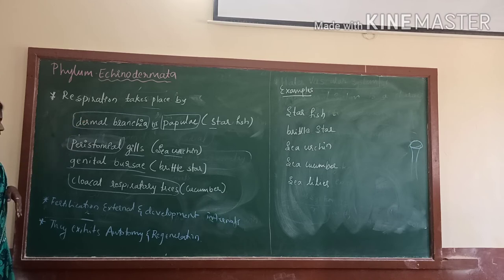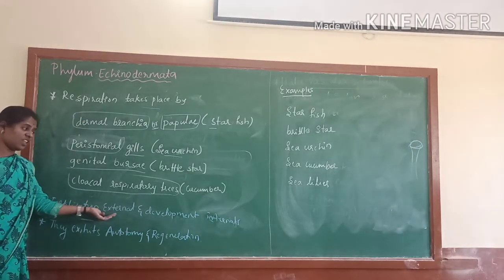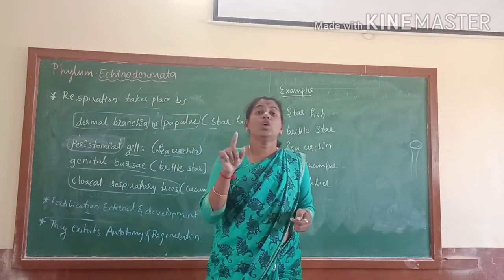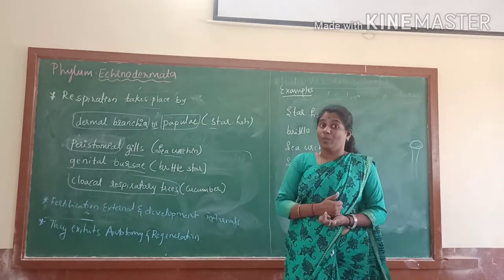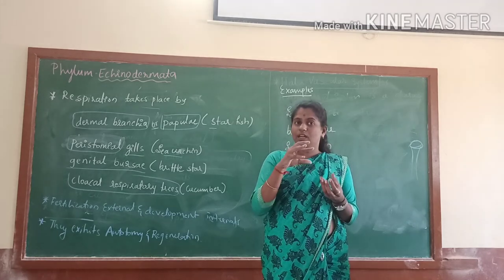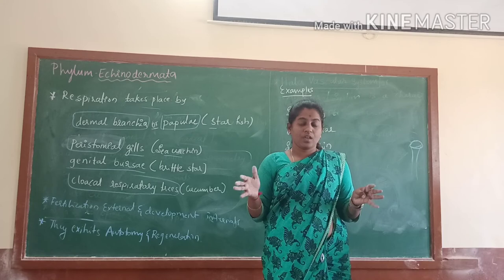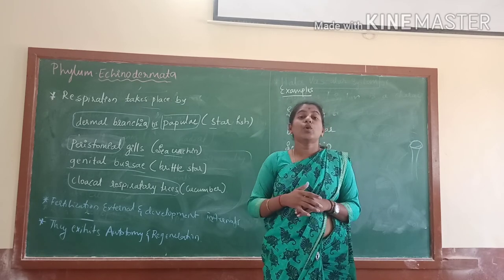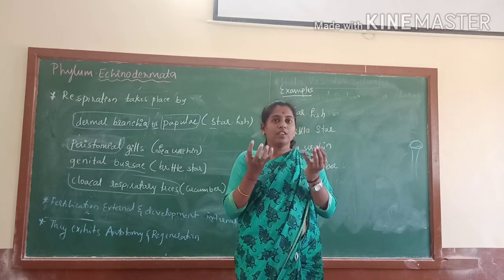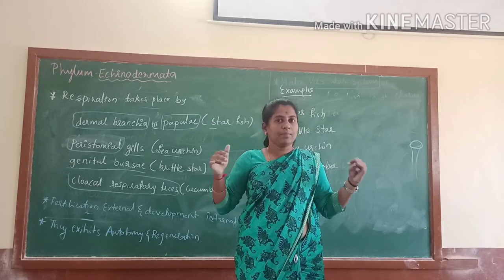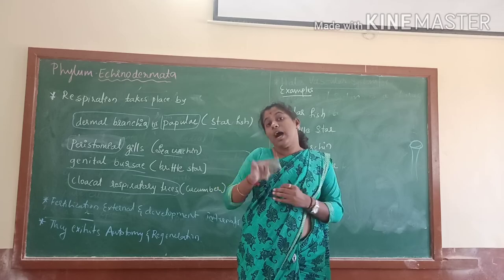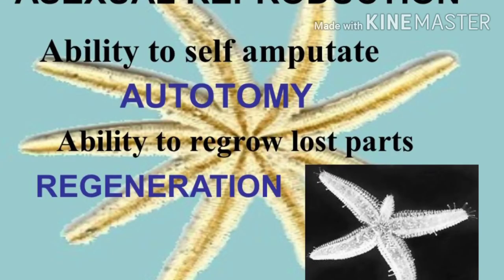Fertilization is external and development is indirect. They also exhibit a special character — that is autotomy and regeneration. Autotomy means when a predator comes to attack the organism, they cut themselves. That process is called autotomy. Regeneration means they have the capacity to regrow lost tissues.